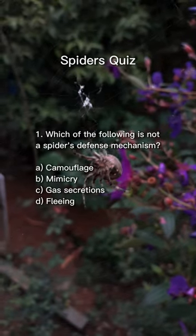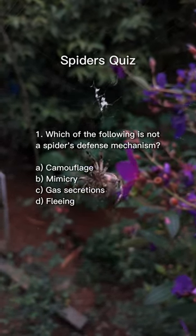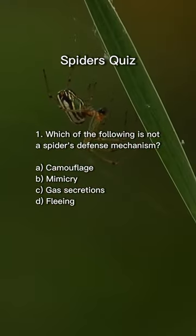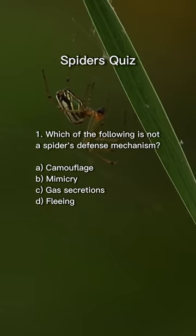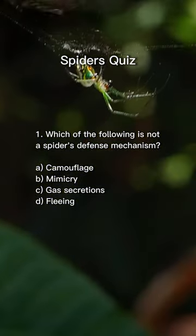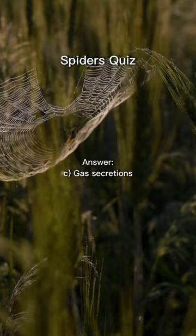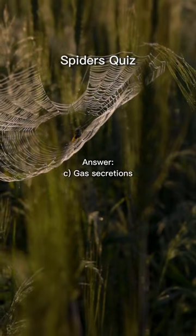1. Which of the following is not a spider's defense mechanism? Answer: C. Gas secretions.